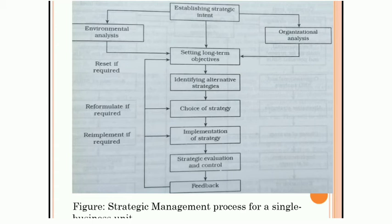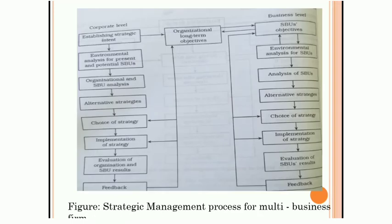Following that: choice of strategy, implementation of strategy, strategic evaluation and control, and finally feedback. Through feedback, we can check whether the objective is achieved or not. If not, then re-implementation of the strategy is required, or reformulation of the strategy, or ultimately a reset of the objective, as required.